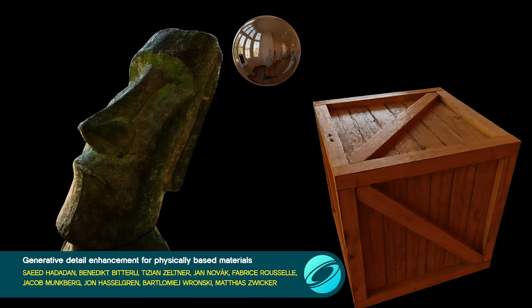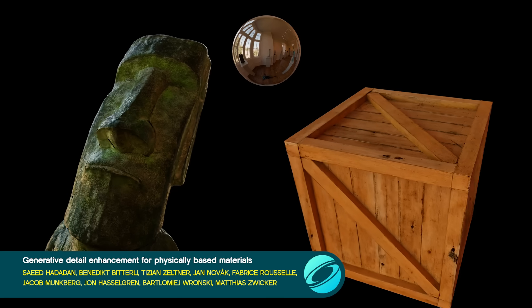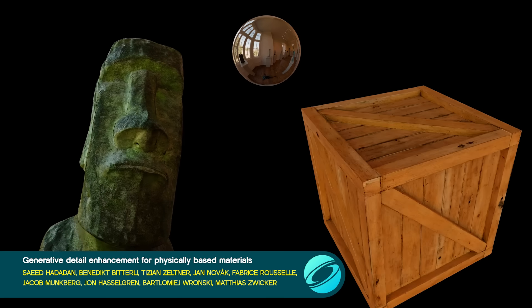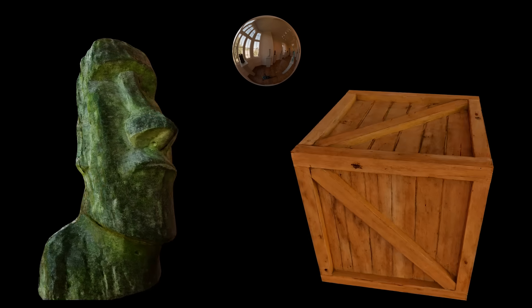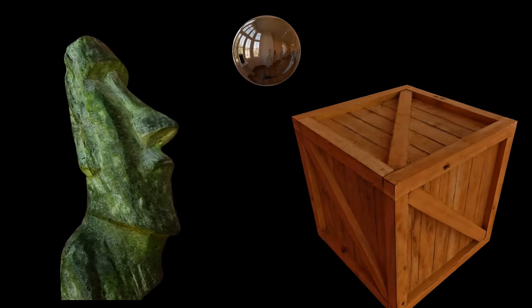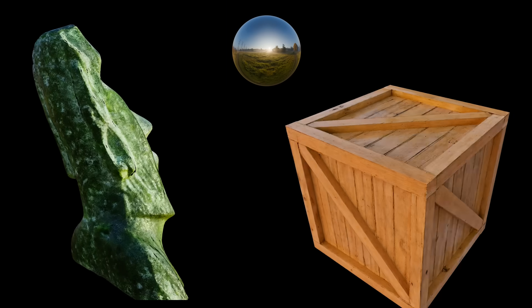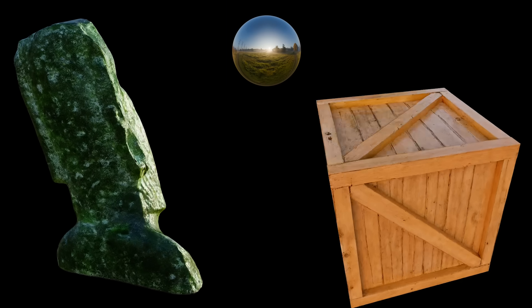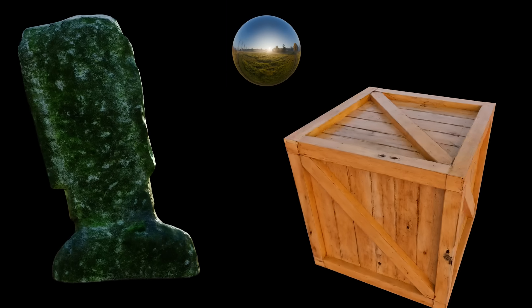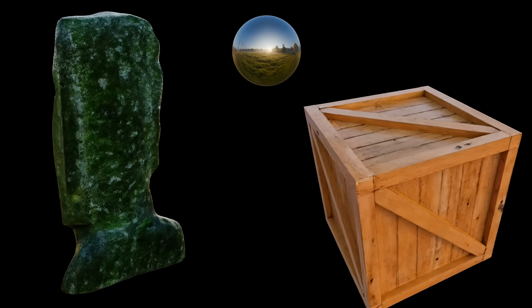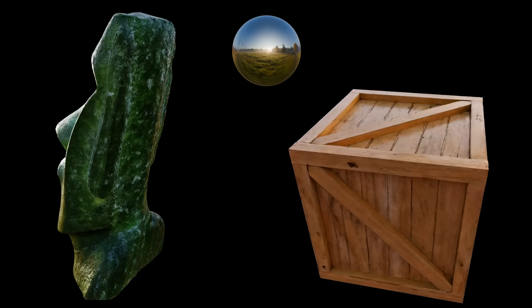This paper shows how to infuse albedo, normal, and roughness textures with details such as wear, aging, and weathering by using an off-the-shelf diffusion model. The output is another texture set amenable to further editing and adjustment.